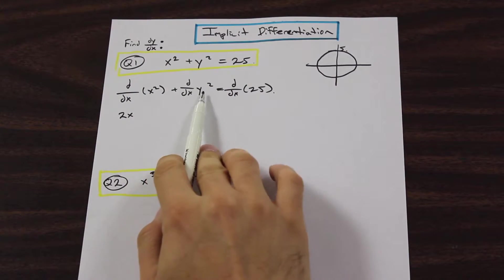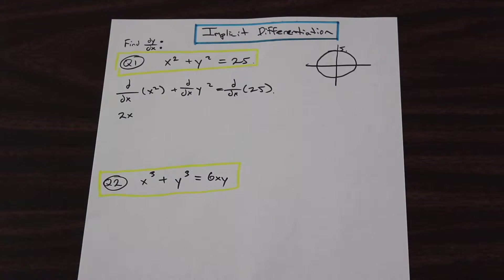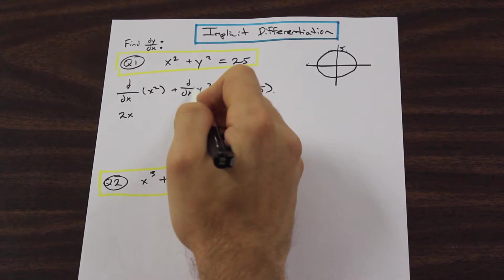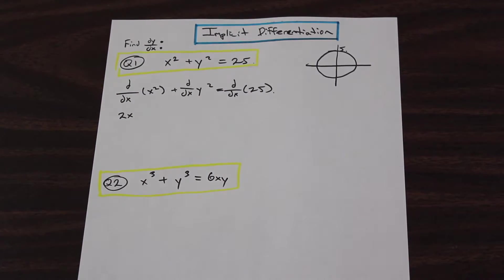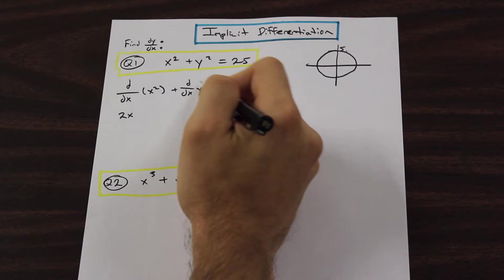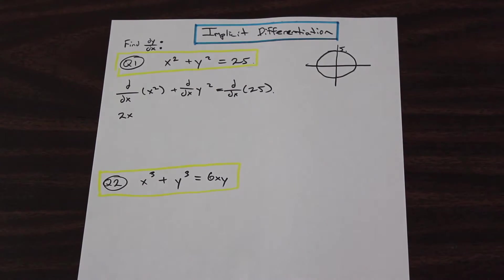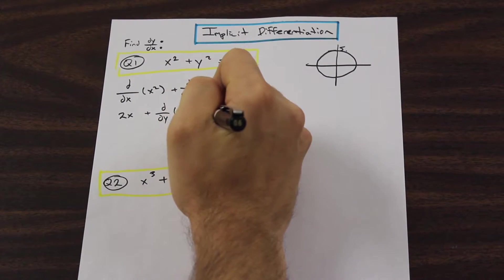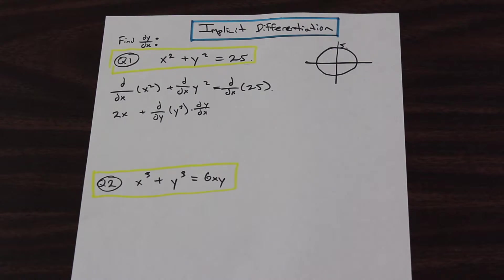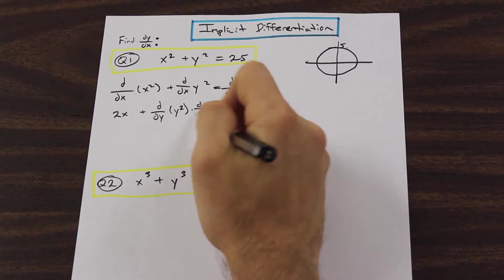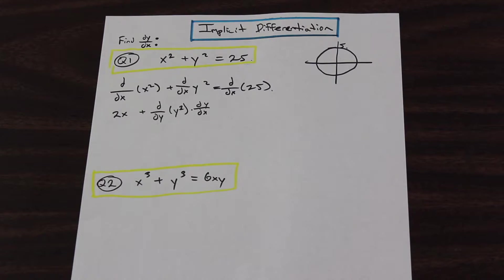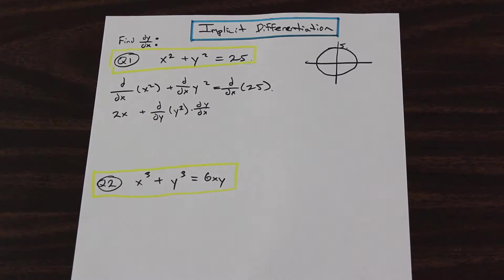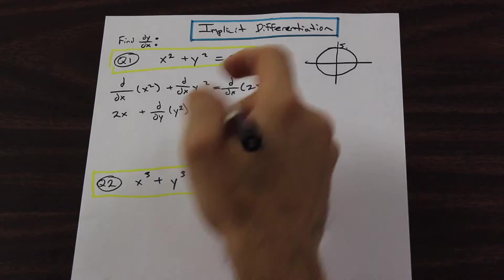However, how do we differentiate y with respect to x? That is where the implicit differentiation comes in. It's essentially the chain rule. We're going to assume that y is the inner function, and we're going to differentiate y as if it were x. So we're going to bring the 2 down, we're going to have 2y to the 2 minus 1, which is going to be 1. And then we're going to multiply by dy by dx. So that's just the trick here. Just remember that if you're differentiating with respect to x, and you have a y variable, differentiate it as normal as you would x, but then just add dy by dx on the end. Simple.